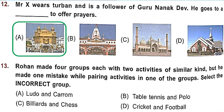Question 13: Rohan made 4 groups of 2 activities of similar kind but made 1 mistake. Select the incorrect group. Option A — ludo and carom: both are indoor, correct. Option B — table tennis and polo: table tennis is indoor while polo is an outdoor game. This is incorrect. So Option B is the right answer.